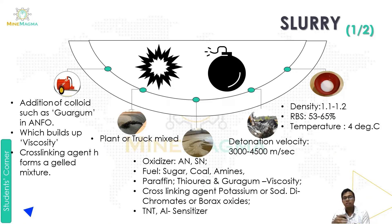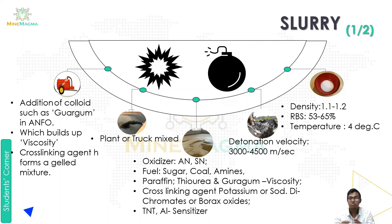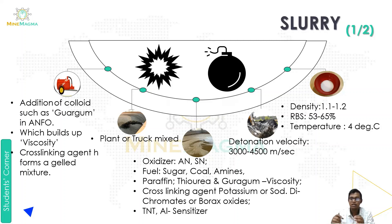Slurry is plant-mixed or truck-mixed. Its composition includes: an oxidizer (ammonium nitrate), a fuel such as sugar, coal, or coal residue, and a viscosity agent such as guar gum or paraffin. Cross-linking agents used include potassium or sodium dichromate or borax oxide. Sensitizers such as TNT and aluminum (Al) are also used. The detonation velocity is 3,000 to 4,000 meters per second, density is 1.1 to 1.2 g/cc, relative bulk strength is 53 to 65%, and it can operate at temperatures down to 4 degrees Celsius.